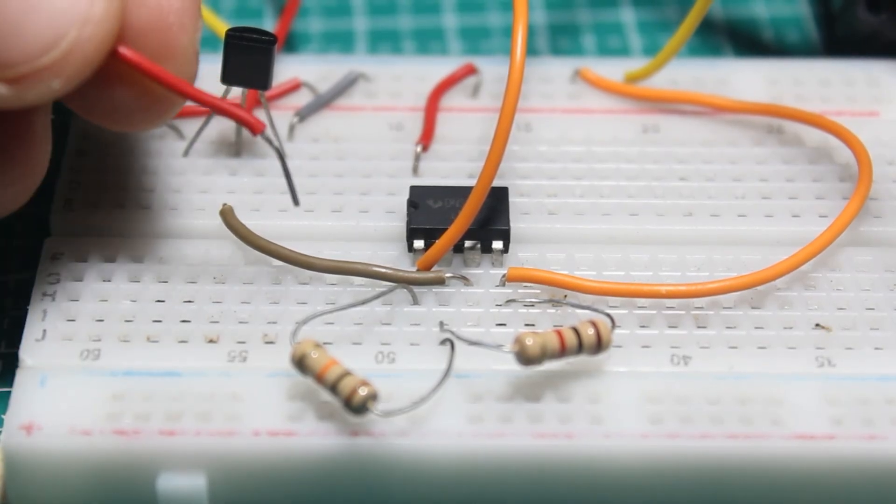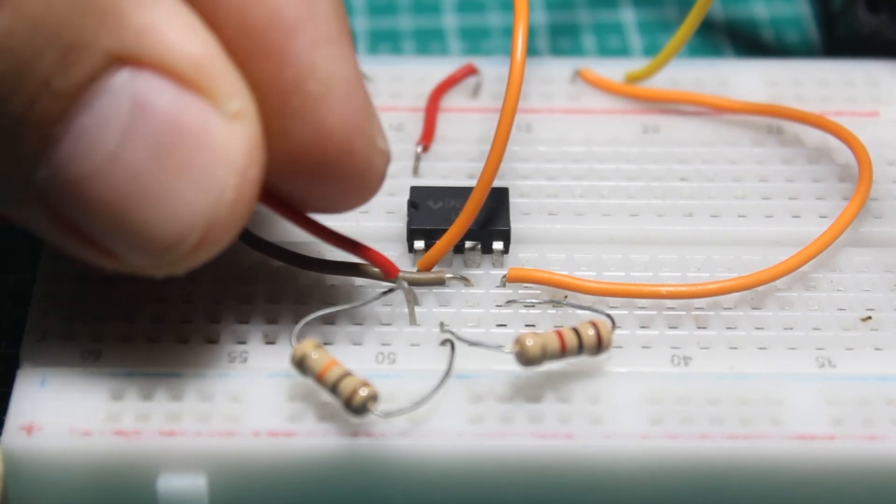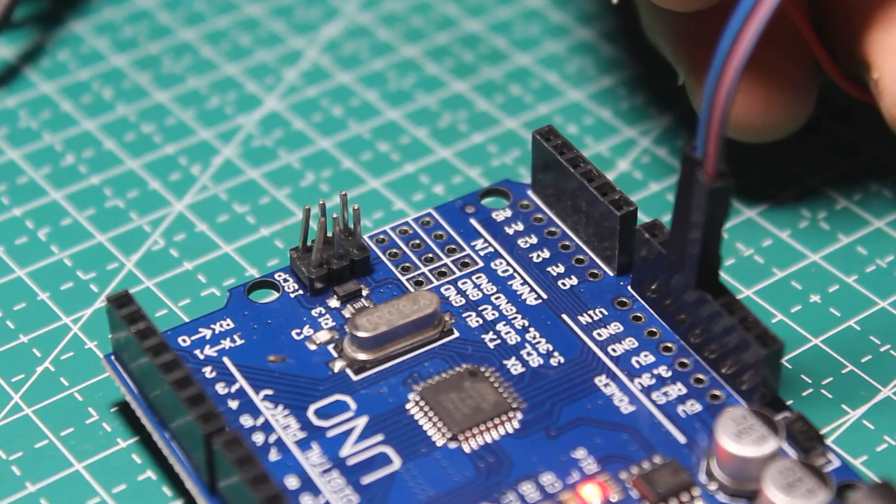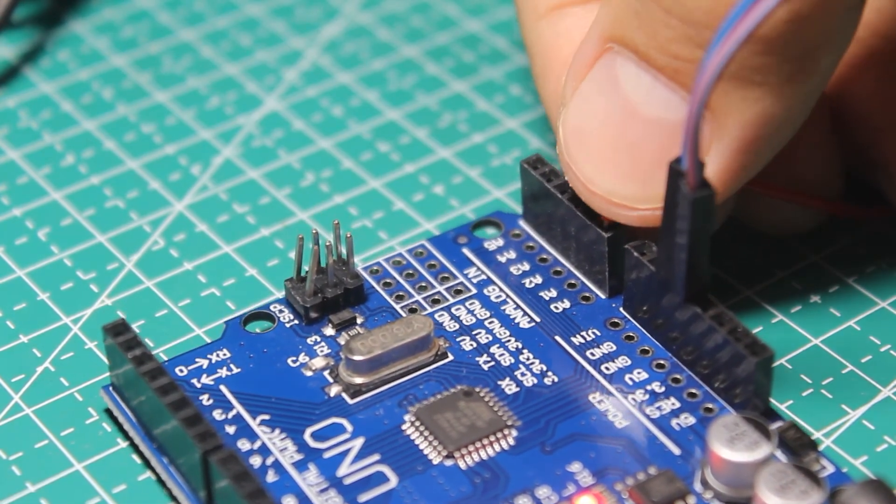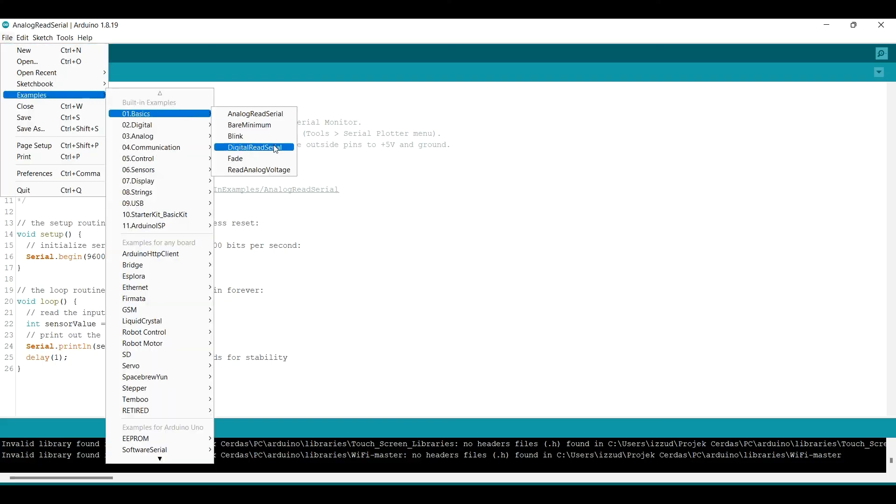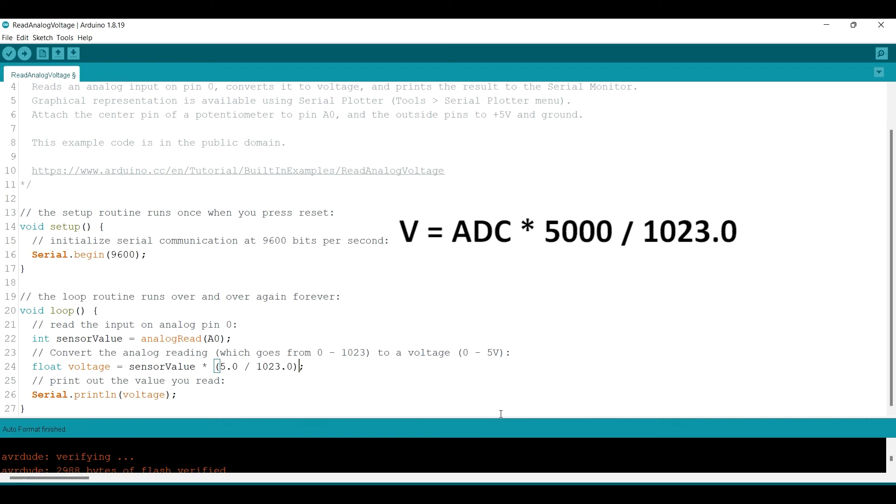Then I will try to measure the sensor with an Arduino. Just connect the output of the op-amp to analog zero. Converting the ADC to voltage, we use this equation. And then we have the result in millivolts.